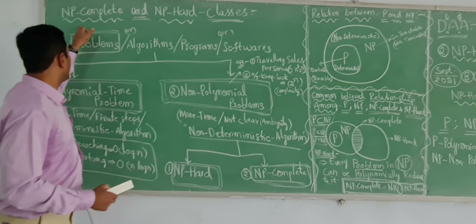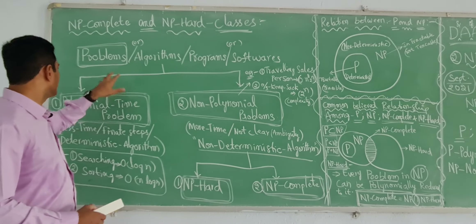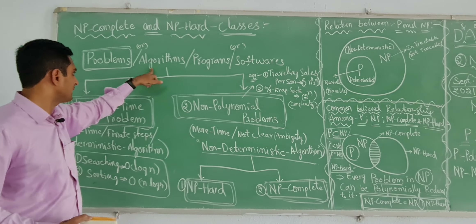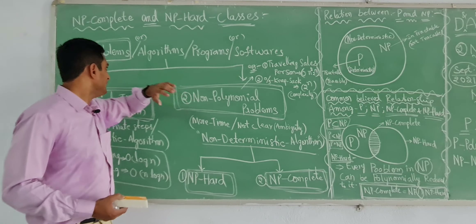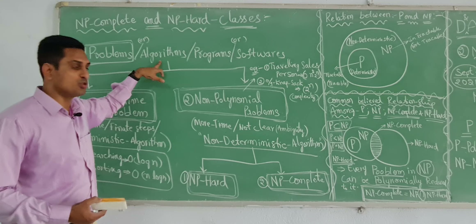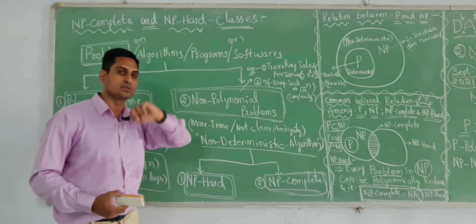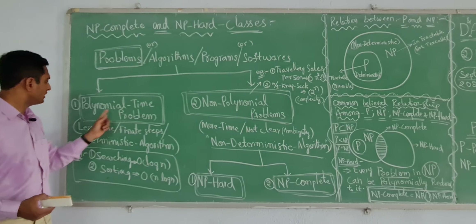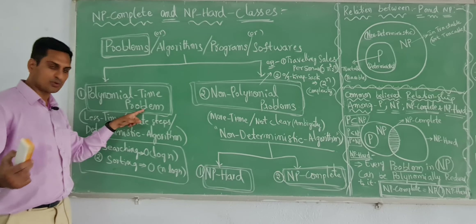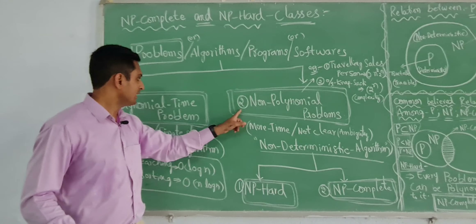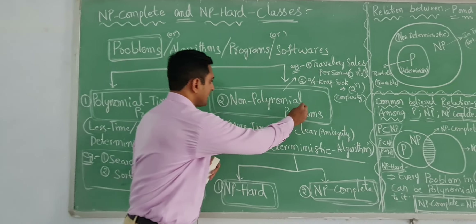The topic is NP-complete and NP-hard classes. A hierarchy is there. Problems or algorithms, programs or software — when you design any software, it can be designed with algorithms. If the algorithm is huge, the problem is huge. Problems can be divided into two groups: first, polynomial time problems; second, non-polynomial time problems.